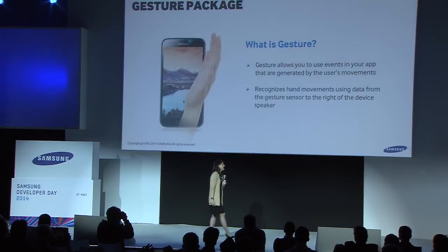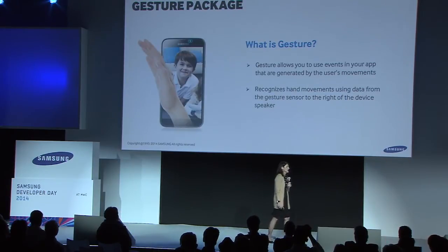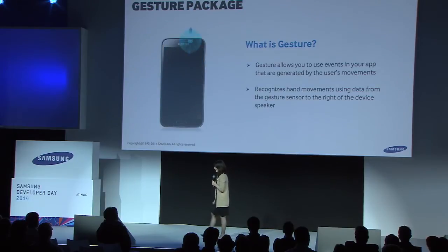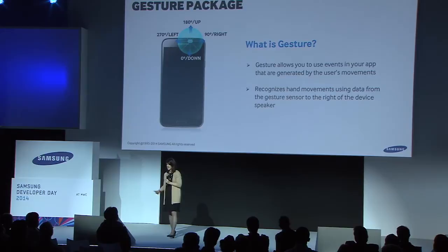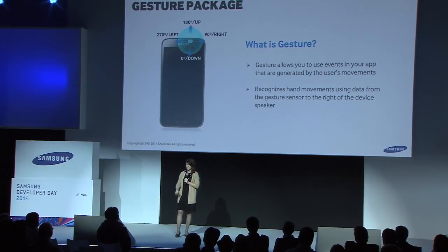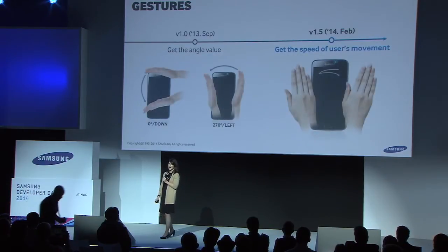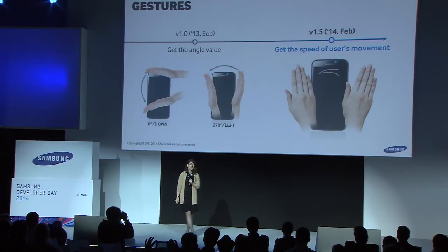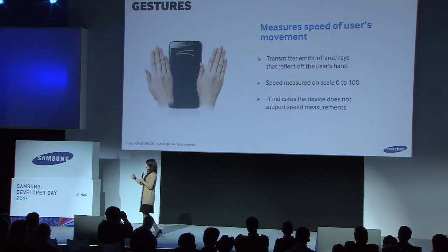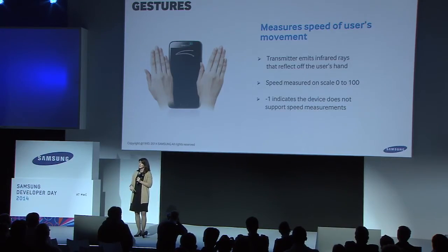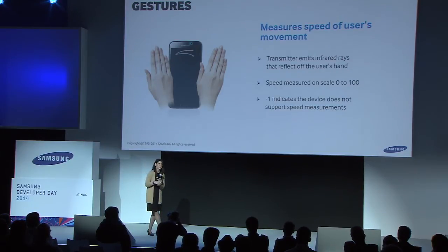Gesture: if you have any of the S3, S4, or S5 devices, there's a sensor on the top that registers gesture motion going back and forth. It's actually tracking the degrees of motion — zero is down, 180 is up, 270 is left, 90 is right. That was all available in the Mobile SDK 1.0. New in 1.5, it now tracks speed going from right to left. It does this by measuring the infrared light reflecting off of the user's hand. The values for speed are from zero to 100; a minus one means that sensor is not enabled to track speed.